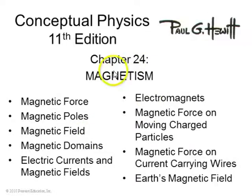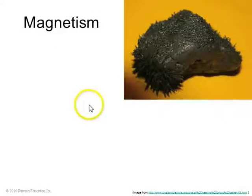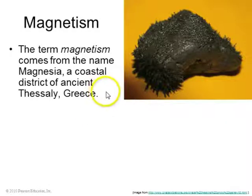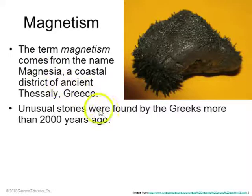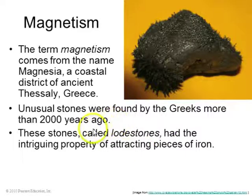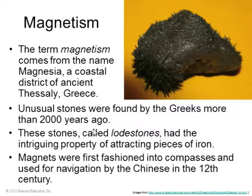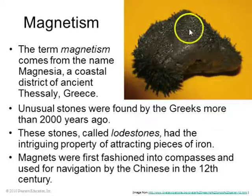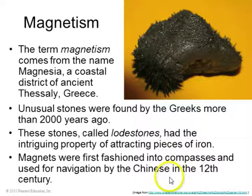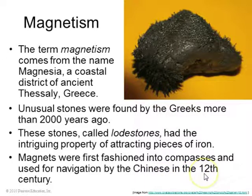Chapter 24 is on magnetism. The term magnetism comes from the name Magnesia, a place on the east coast of Greece where they found lodestones more than 2,000 years ago. These are rocks that have a weird tendency to attract iron filings, and they can be used in compasses, which were used long ago by the Chinese for navigation.